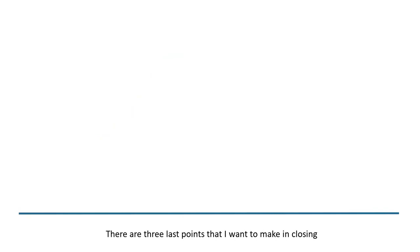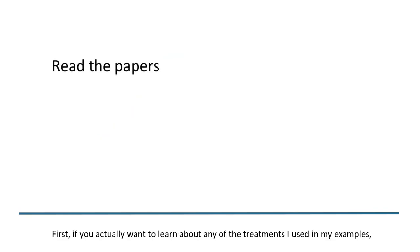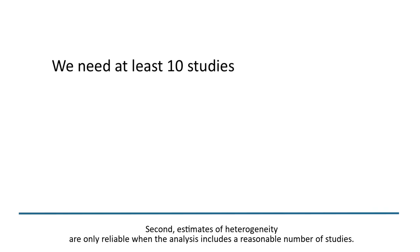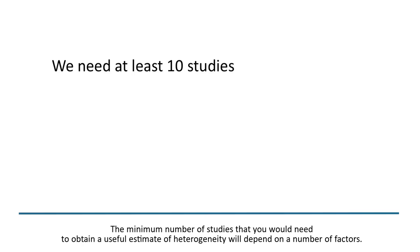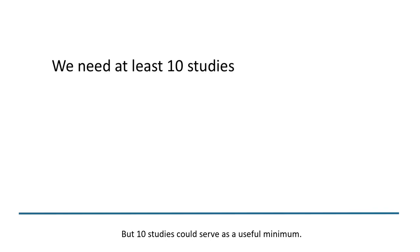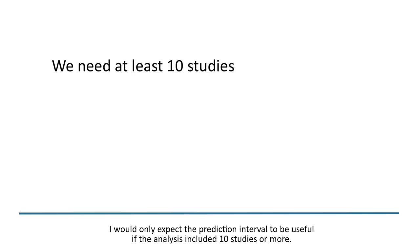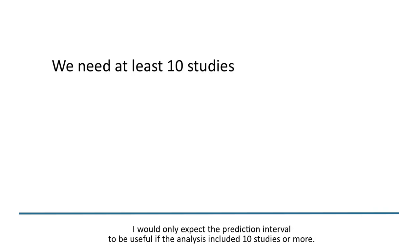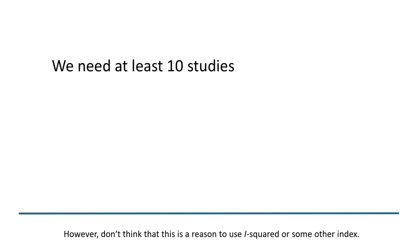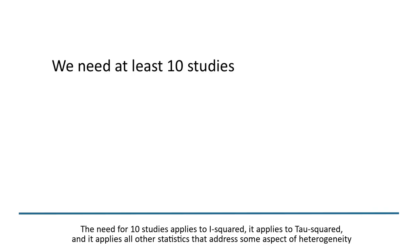There are three last points. First, if you want to learn about any of the treatments used in my examples, please read the original papers — don't rely on this video. Second, estimates of heterogeneity are only reliable when the analysis includes a reasonable number of studies; ten studies could serve as a useful minimum for the prediction interval to be useful. However, this minimum applies equally to I-squared, tau-squared, and all other statistics addressing heterogeneity — it is not a reason to use I-squared instead.